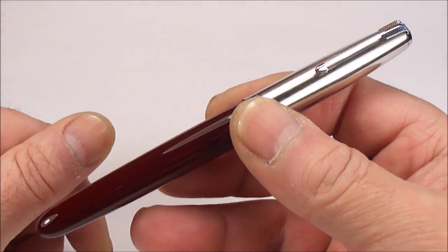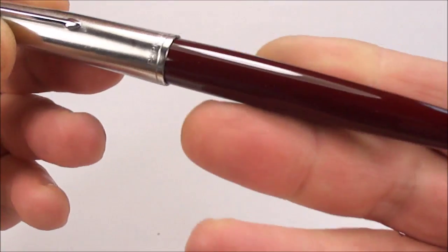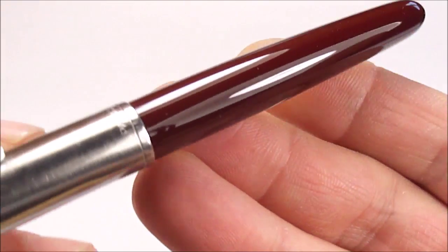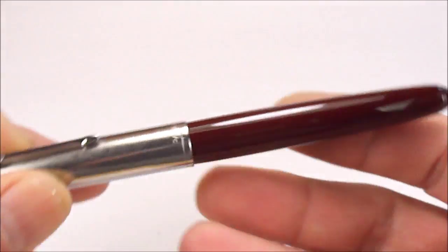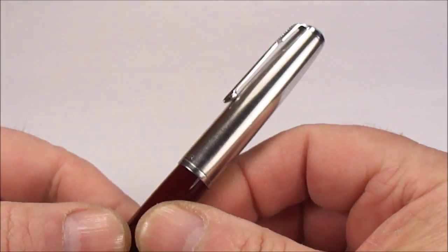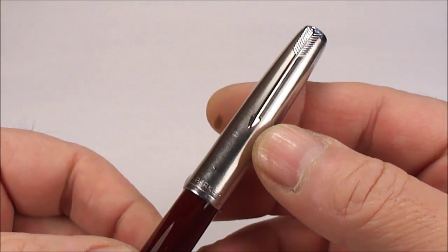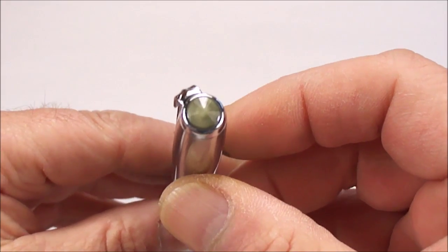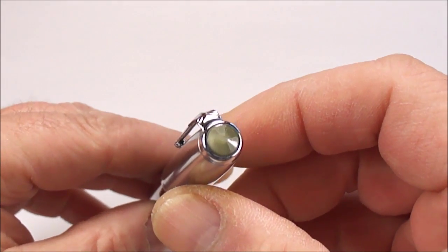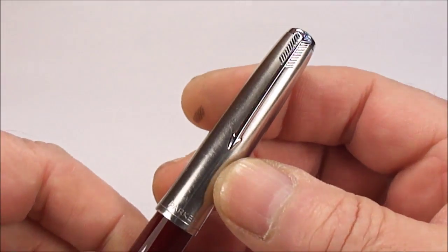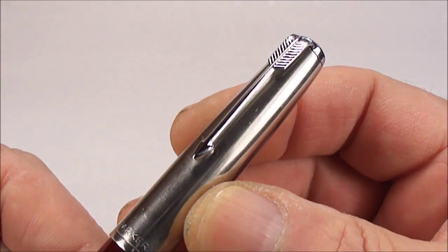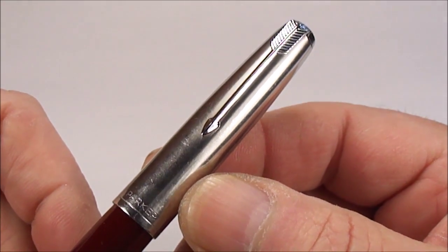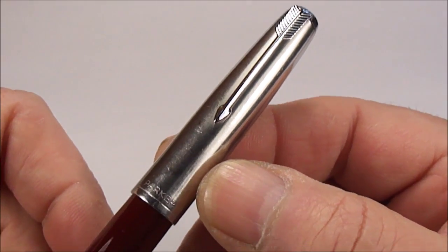So, as we said, we've got a Parker 51 from circa around the 1950s. I don't know how clear it is, but what we've got, it's in burgundy. And it comes with this, what Parker called a Lustre Alloy Cap. And to the top there, we've got this grey-green jewel to the top. And as always, the very recognizable Parker arrow clip to the top of the cap, like so.